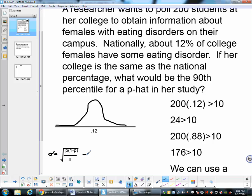So now we just have to fill in the information. We're going to take 0.12, multiply it by 0.88, and divide that by 200.